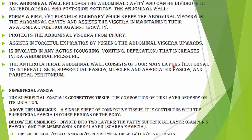The anterior lateral abdominal wall consists of four main layers from external to internal, known as: skin, superficial fascia, muscles and the associated fascia, and parietal peritoneum.